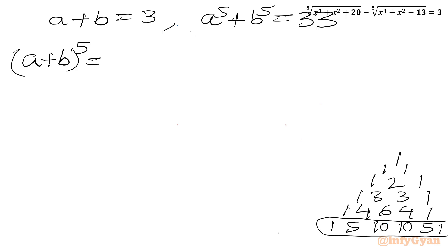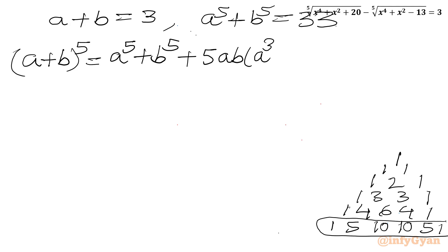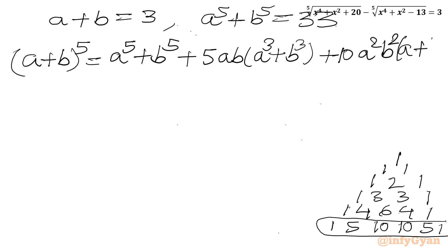For expansion coefficient 1 we will have two terms: a⁵ + b⁵. Plus for expansion coefficient 5 we can write 5ab(a³ + b³). And for coefficient 10 I will have the term 10a²b²(a + b).